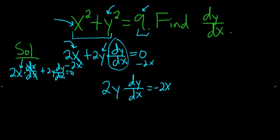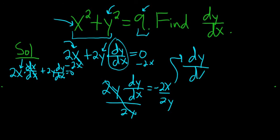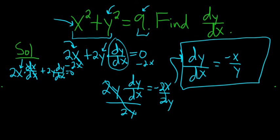To finish, we'll just divide by 2y. So divide by 2y, divide by 2y. So these cancel, so we end up with dy dx is equal to negative x over y, right? Because the 2s cancel, and that is the derivative of y with respect to x.